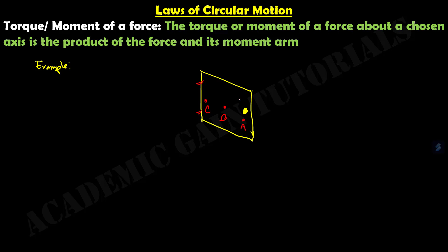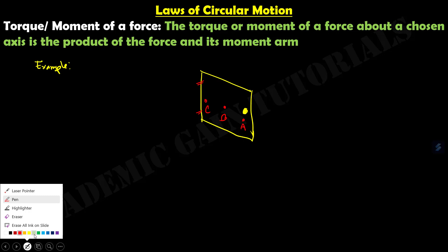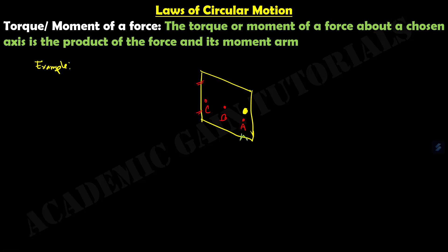This is the handle of the door. If we apply an equal force F at all three points — at A, at B, and at C — what will happen? When we push at point A, it is easy to shut the door. It is more difficult at point B, and at point C it is much more difficult to shut the door.